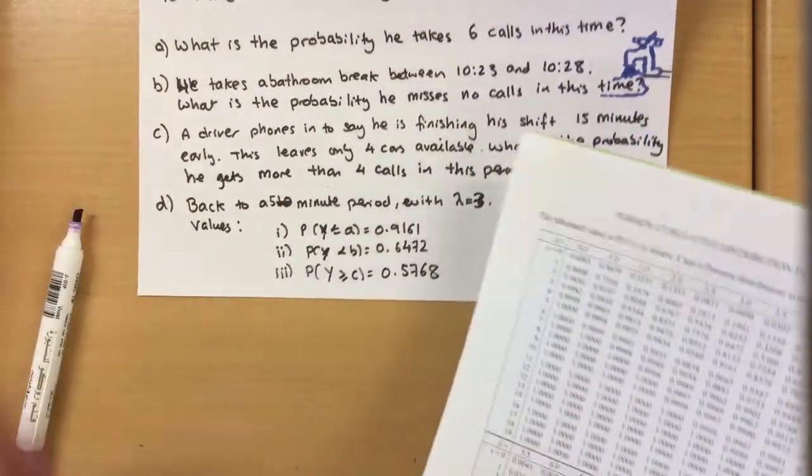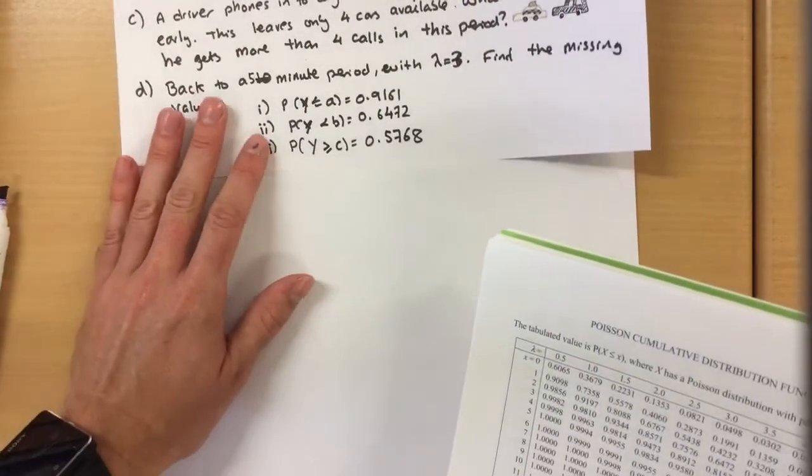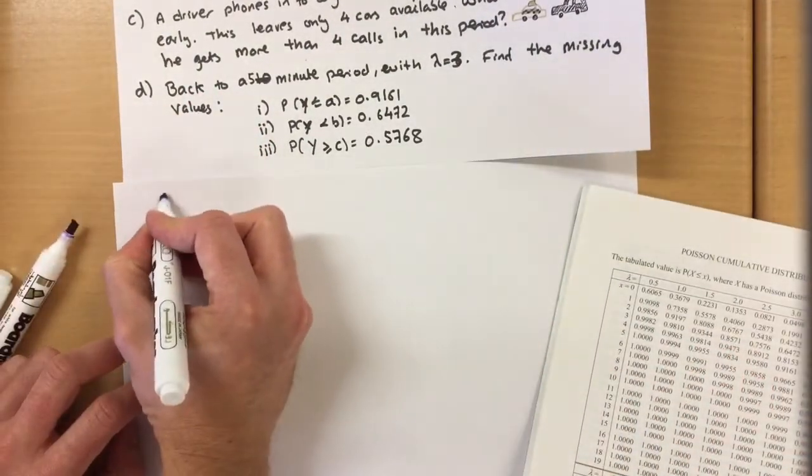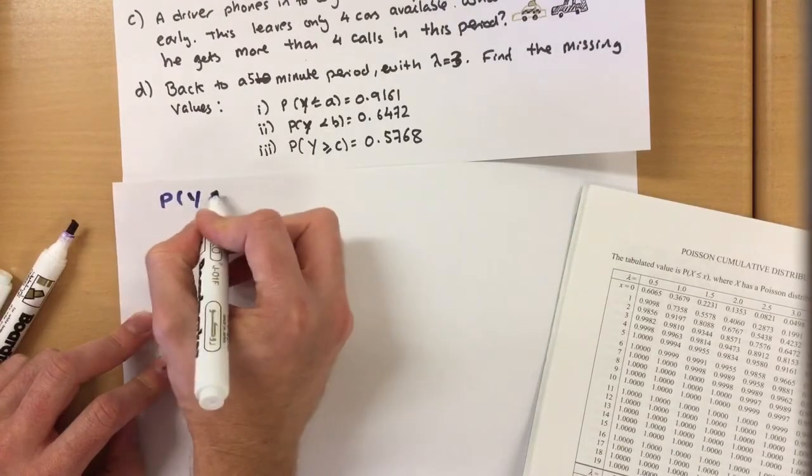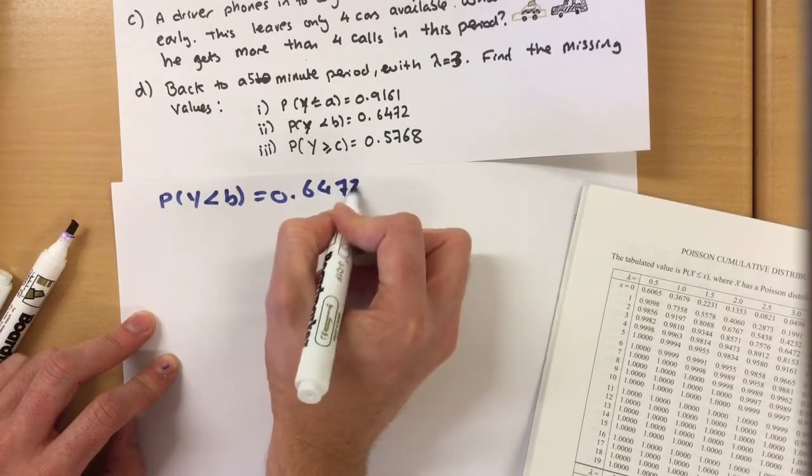Now it starts to get a little bit trickier now. Okay, this time Y is less than b is 0.6472.